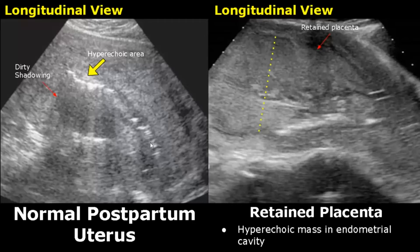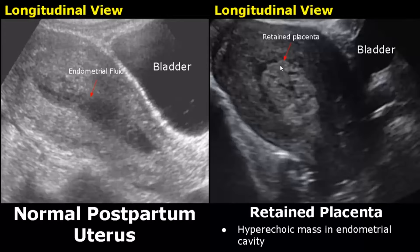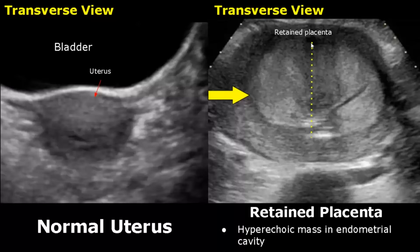This image is compared with the normal postpartum appearance of the uterus. Here is another image of a retained placenta: a hyperechoic mass in the endometrial canal with the patient suffering from fever, pelvic pain, and abnormal bleeding. In transverse view, we can see an enlarged uterus with a hyperechoic mass in the endometrial canal.